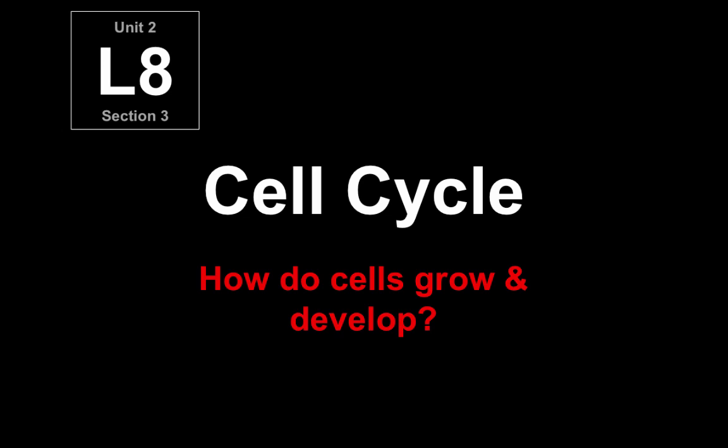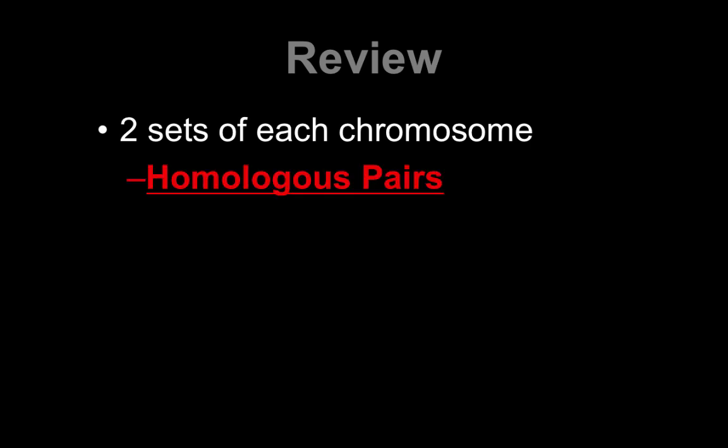In this video, we're going to look at the cell cycle and how cells grow and develop. So as a review, remember that all cells have two sets of chromosomes and we call these pairs homologous pairs, meaning that they have the same genes on them.